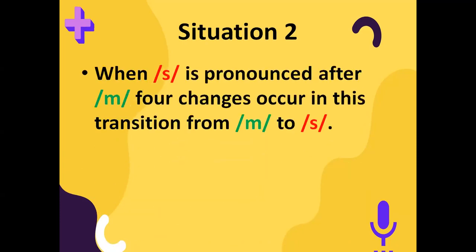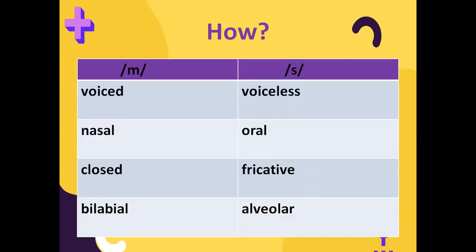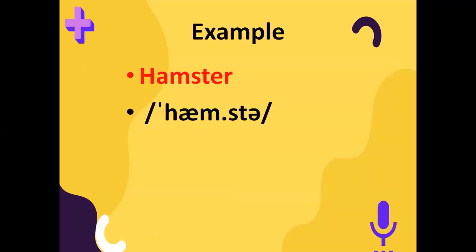Situation two: when S is pronounced after M, again four changes occur in this transition from M to S. M is voiced and S is voiceless; M is nasal and S is oral; M is closed and S is fricative; M is bilabial and S is alveolar. So the same thing will occur — different places of articulation — and a new sound will be produced, and that sound will be a P sound.